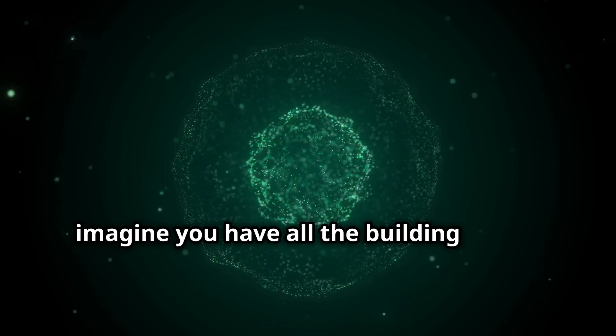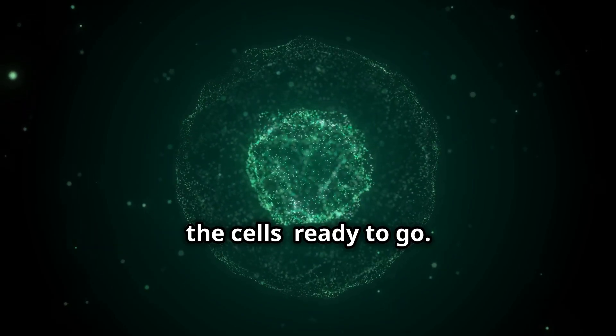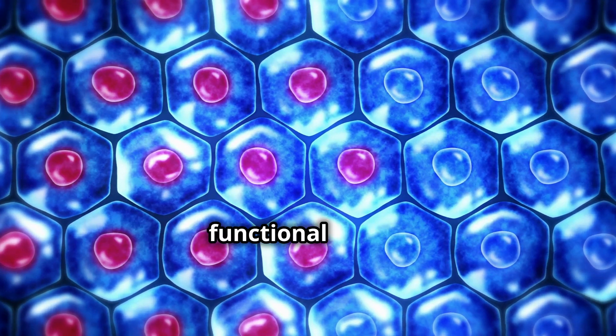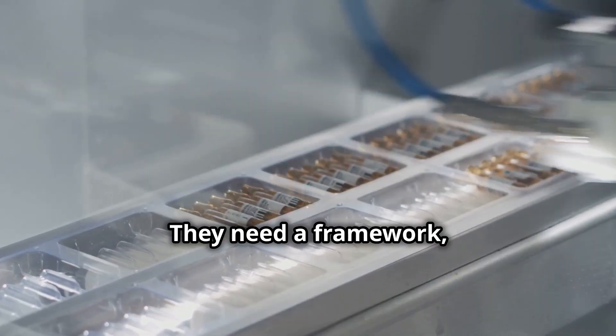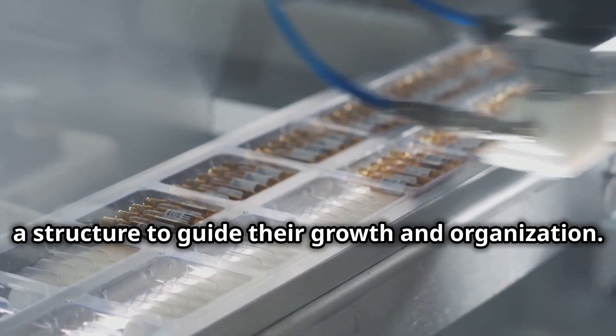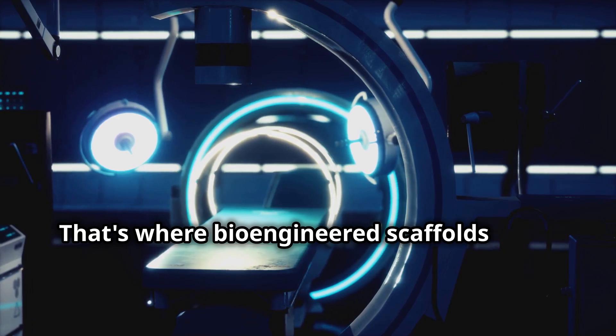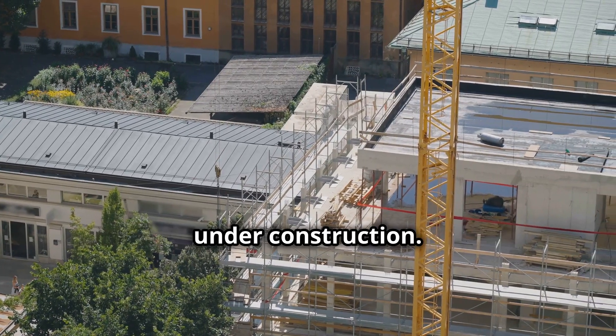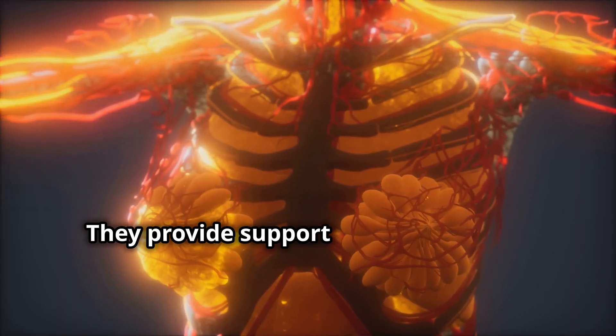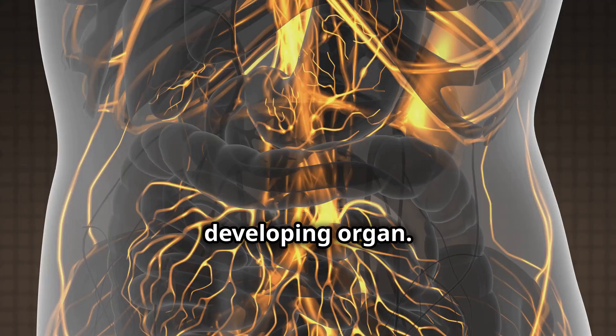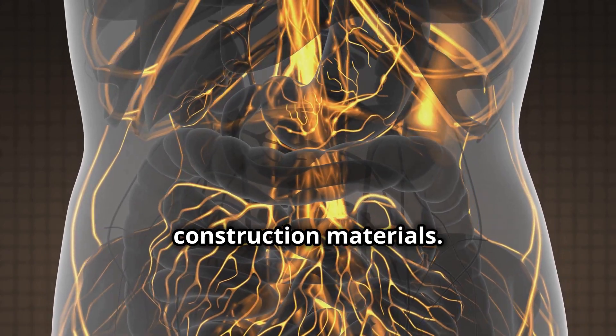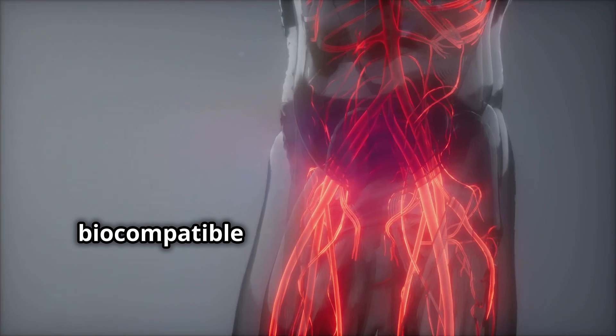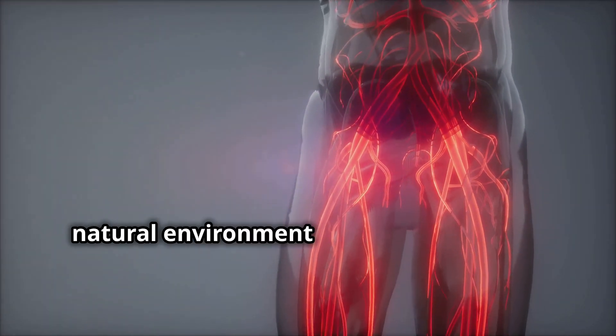Now imagine you have all the building blocks, the cells, ready to go. You wouldn't just throw them together in a pile and expect them to magically form a functional organ, right? They need a framework, a structure to guide their growth and organization. That's where bioengineered scaffolds come into play. Think of these scaffolds as the scaffolding you see around a building under construction. They provide support and shape to the developing organ, but these aren't your average construction materials. We're talking about intricate, three-dimensional structures made from biocompatible materials that mimic the natural environment of the human body.